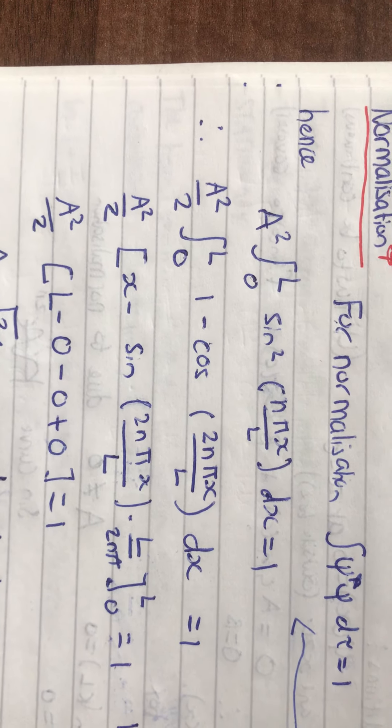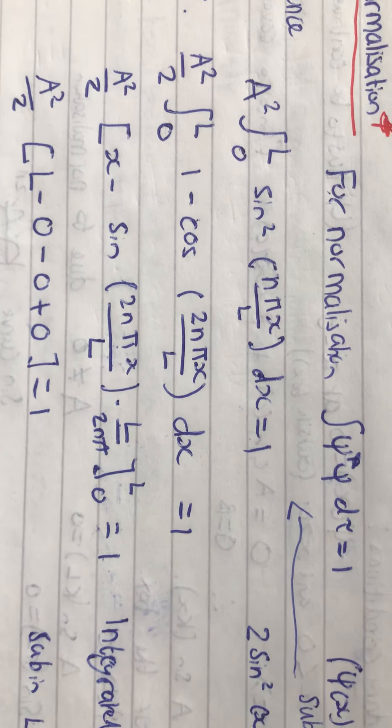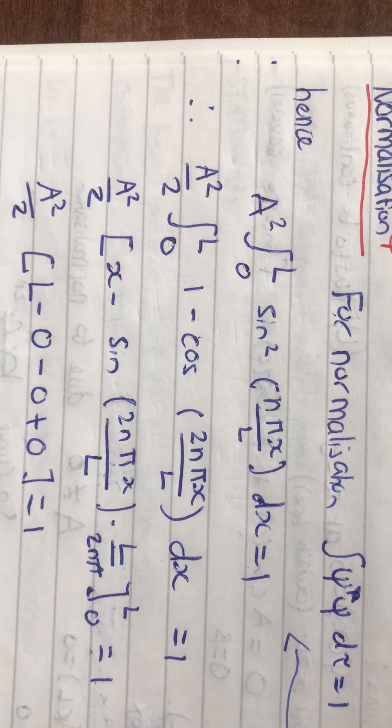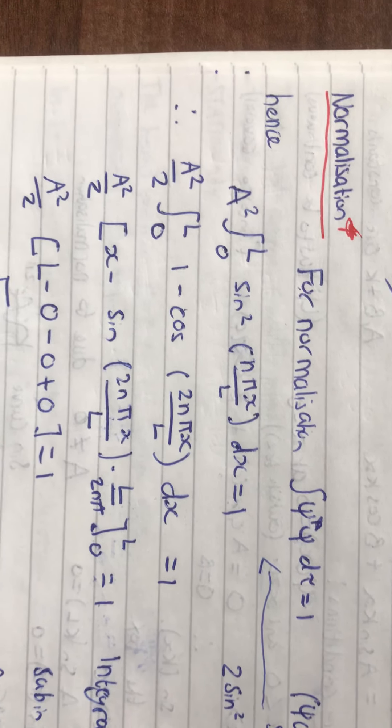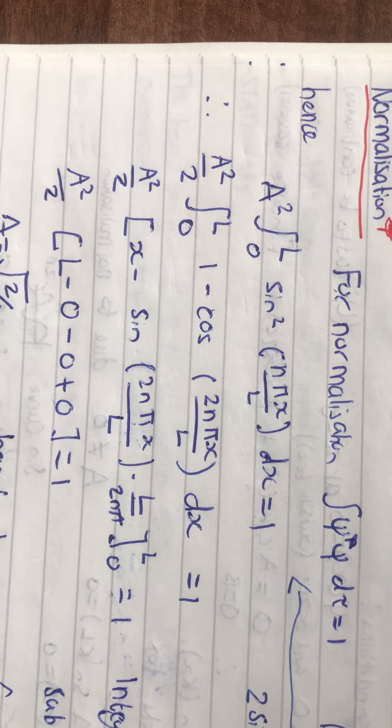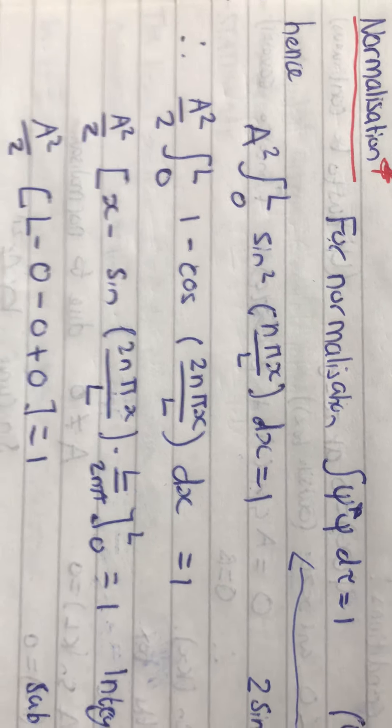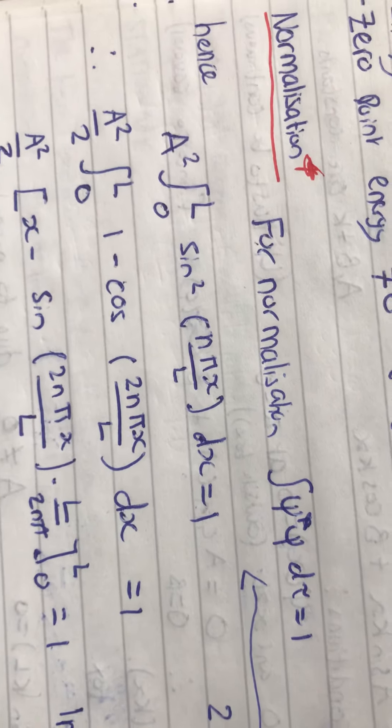we'll have 2 minus cos, et cetera, et cetera. But, if we take a factor of 2 out, it goes down as a division, and that gets to 1 minus cos, et cetera, et cetera. Then we need to integrate it.